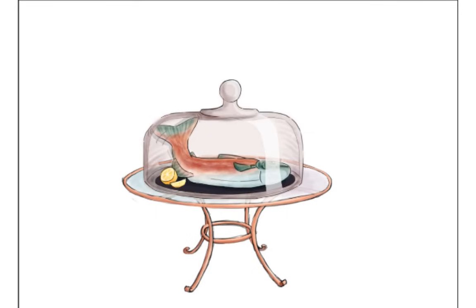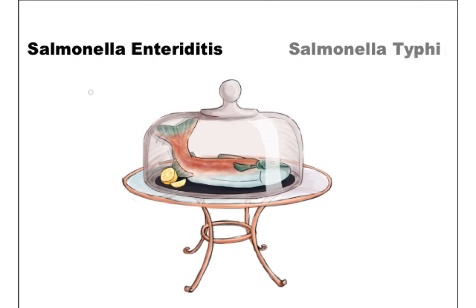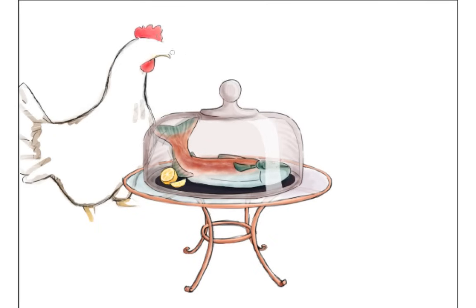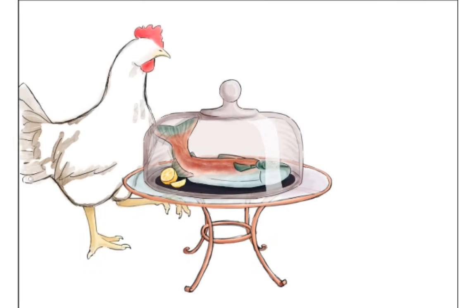Now it's time to differentiate between the two subspecies of Salmonella. Over on the left we'll have Salmonella enteritidis, and on the right Salmonella typhi. On the left we'll have a chicken. This will remind us that we acquire Salmonella enteritidis by eating undercooked chicken, and that chickens are the main reservoir.